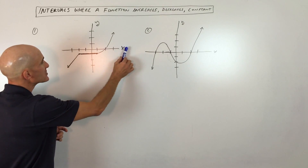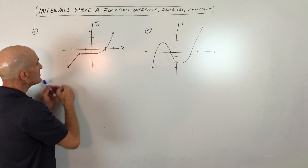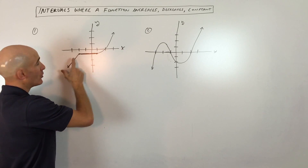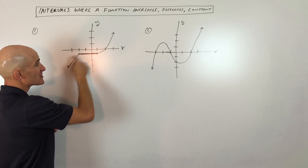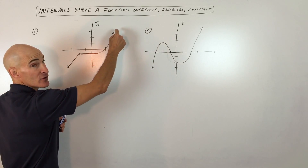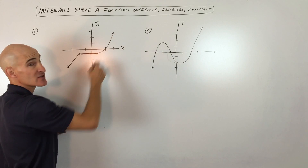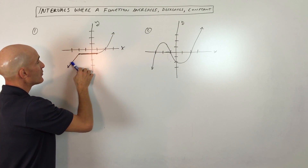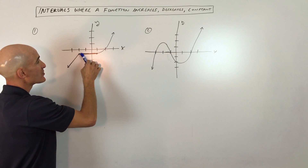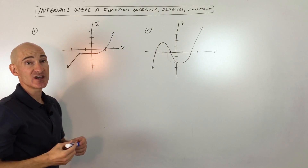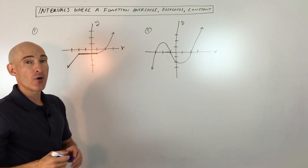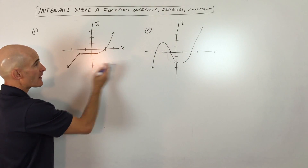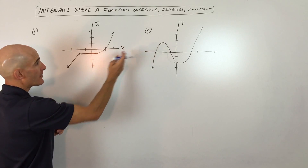When you scan across, you can see the graph is going up for this piece, and it's also going up to the right for this piece. So as the x values are increasing, the y values are increasing here and here. When we write the intervals, we want to think about going from left to right, or from low to high.